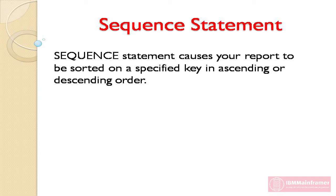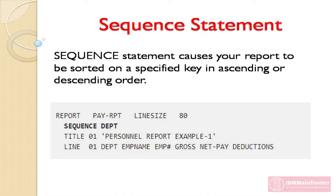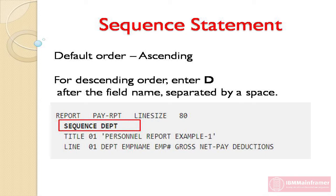First: the Sequence statement. The Sequence statement causes your report to be sorted on a specified key in ascending or descending order. In our example, the report output should be sequenced on Department in ascending order. We accomplish this by placing the Sequence statement and the field name 'department' after the Report statement. Ascending order is the default for the Sequence statement. For descending order, enter 'd' after the field name, separated by a space.